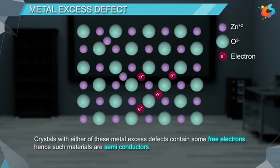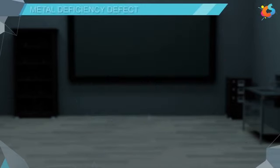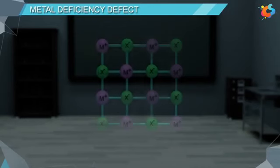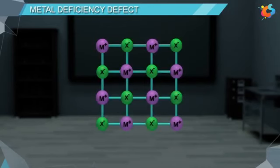Metal deficiency defect: this kind of metal deficiency defect is created when a metal ion goes missing from its original lattice site. To maintain the charge neutrality, a metal ion having higher positive charge is added to occupy the vacancies created in the crystal. As this metal ion has higher positive charge, it will occupy only some of the sites to balance the overall charge and other sites will be left vacant.